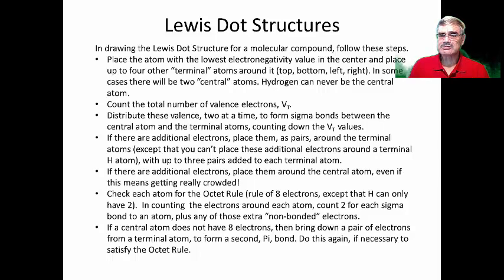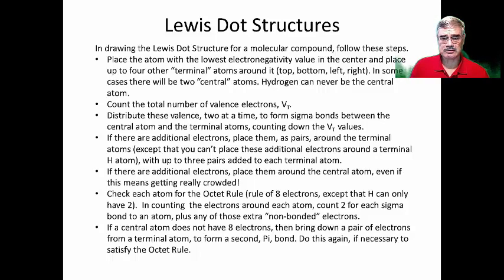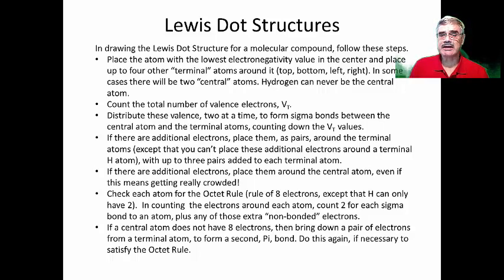An important part of this rule is that hydrogen, even though it has a very low electronegativity, is too small and can never be the central atom. The central atom is quite often carbon. Rule two: count the total number of valence electrons — I usually call this VT for total valence. Rule three: distribute these valence electrons two at a time, forming sigma bonds between the central atom and each of the terminal atoms, counting down VT to zero.